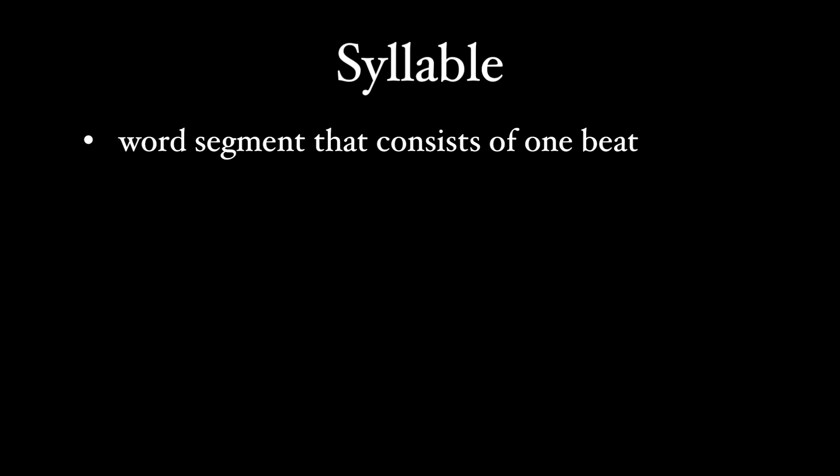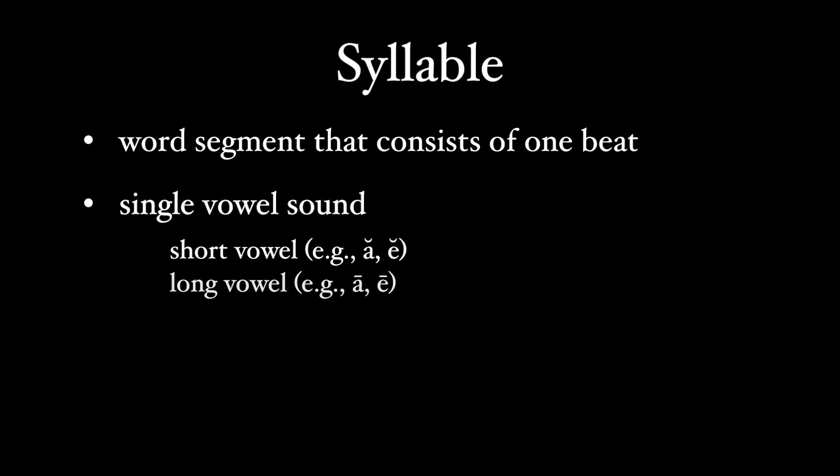A syllable is a segment of a word that consists of essentially one beat. Each syllable contains a single vowel sound, whether it's a short or a long vowel or even a diphthong. I like to think of a syllable like a sandwich - the vowel is the middle part, the meat or the peanut butter.